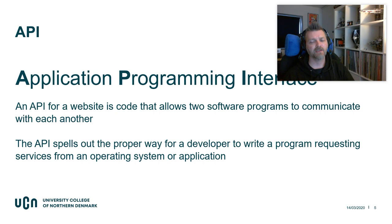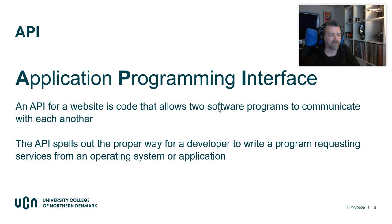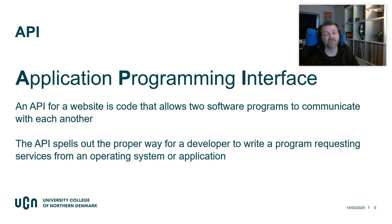What is an API? API is short for Application Programming Interface. An API for a website is code that allows two software programs to communicate with each other. So we have the website, the browser, who talks to a server which feeds it with information. Those are the two programs.